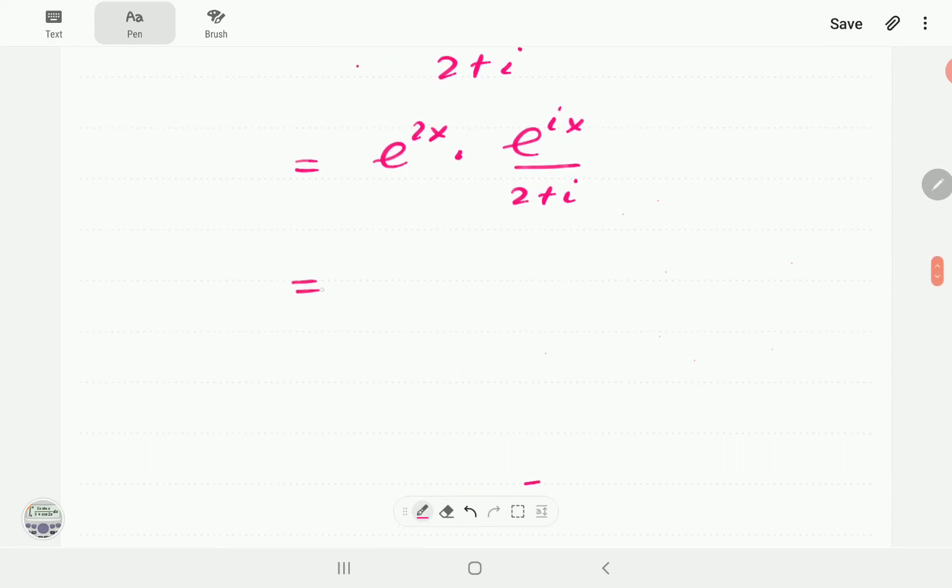So we're going back to this and then we're going to go back again to that. So the e to the ix we're going to write as cos x plus i sin x all over 2 plus i.